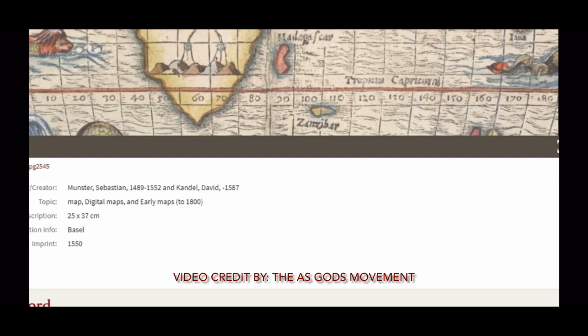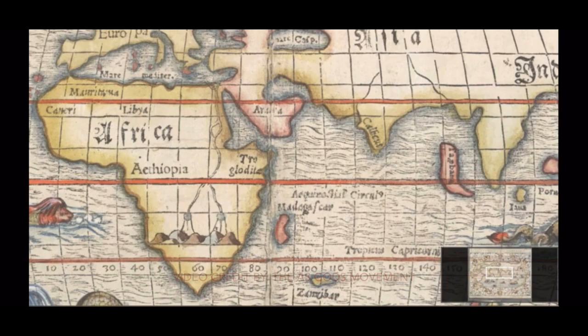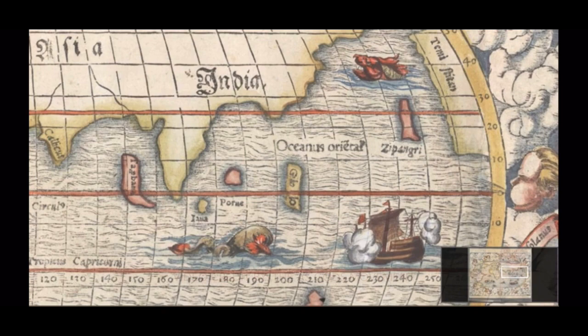This guy's name is Sebastian Munster. He drew this map — he and David Kandel — between 1489 and 1552. This map was imprinted in 1550. Look at the timelines of these people drawing these maps back then and what you see today. Then you pick up the Bible and read it, and you'll see that there's a great deception that has taken place just with the mapping alone, just to make sure you're fooled out of believing the scriptures.